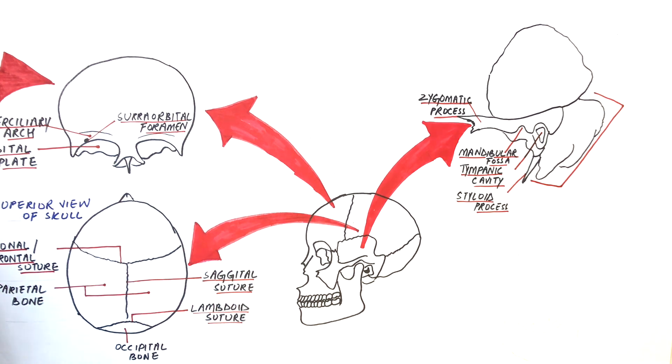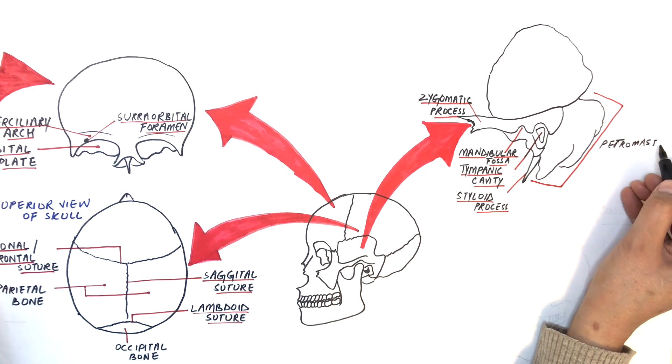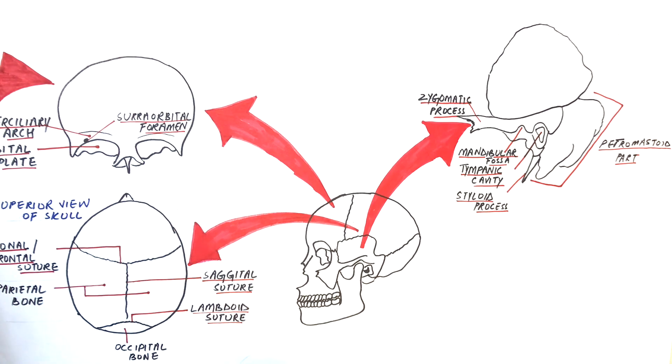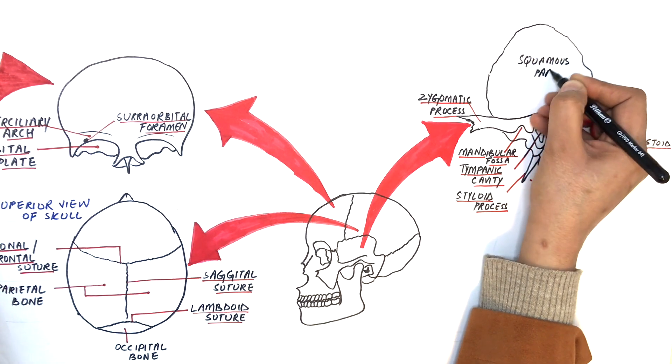It also contains a petromastoid part and a squamous part. The squamous part of the temporal bone is attached to the parietal bone at the squamous suture.